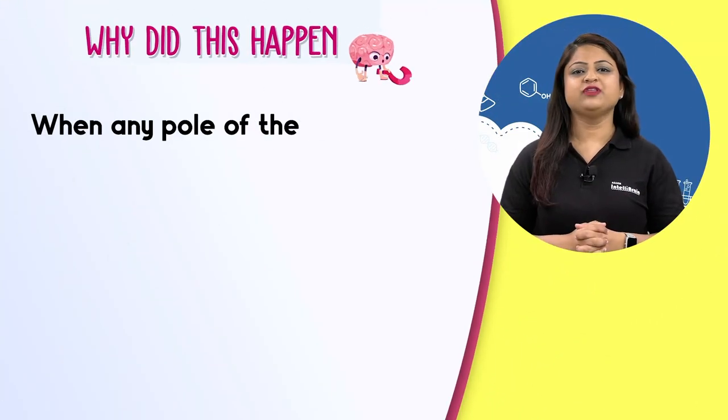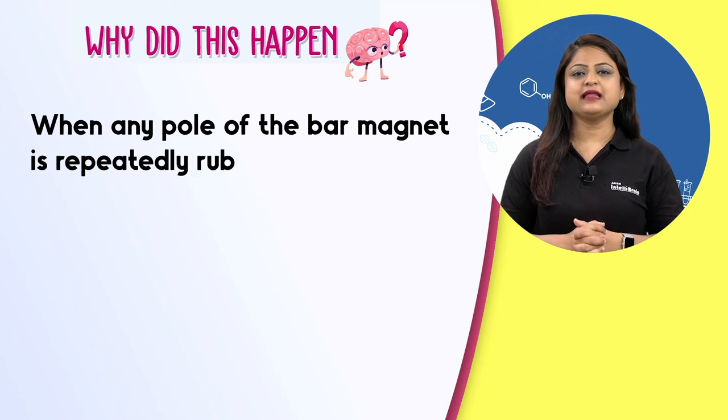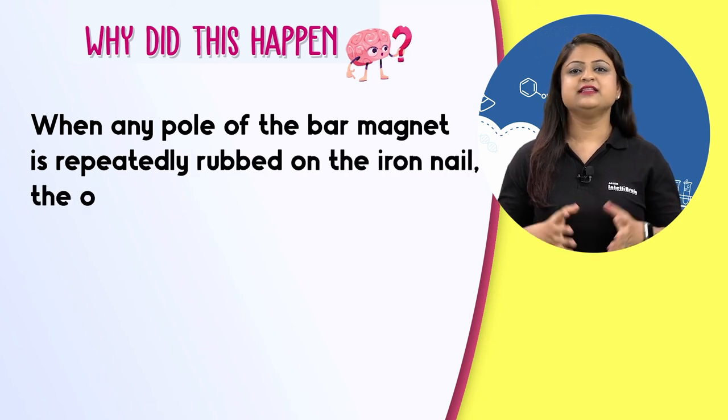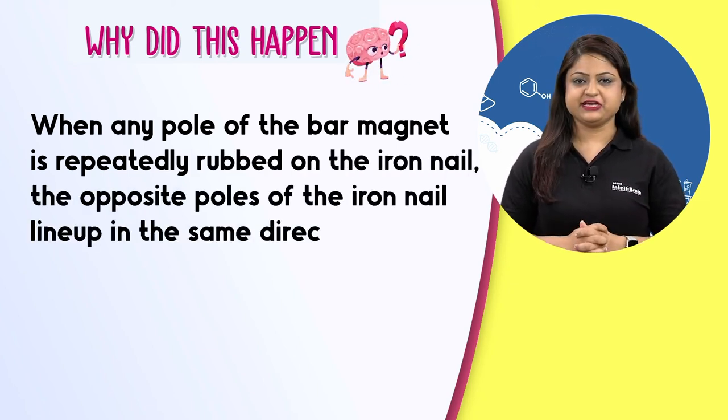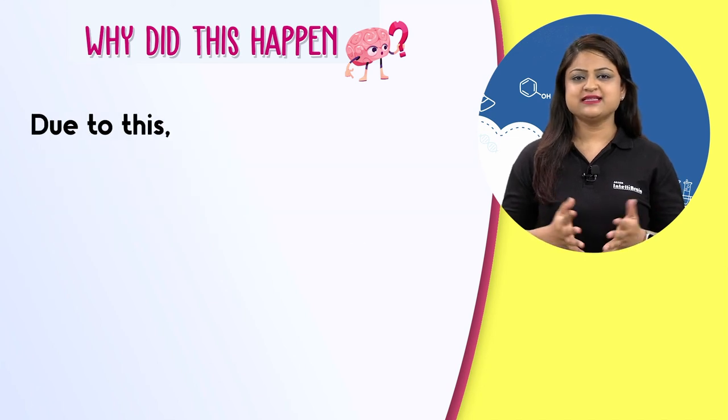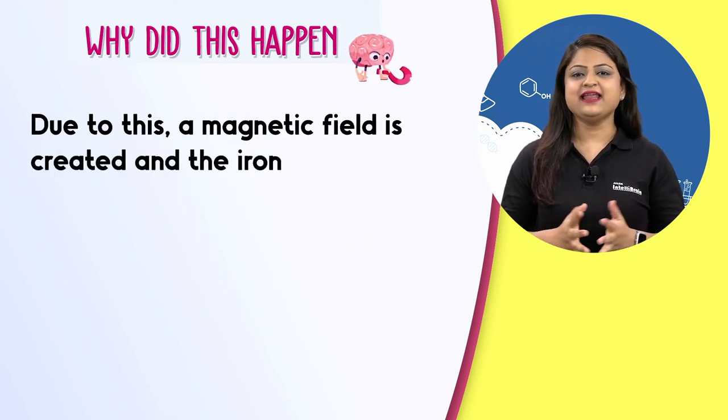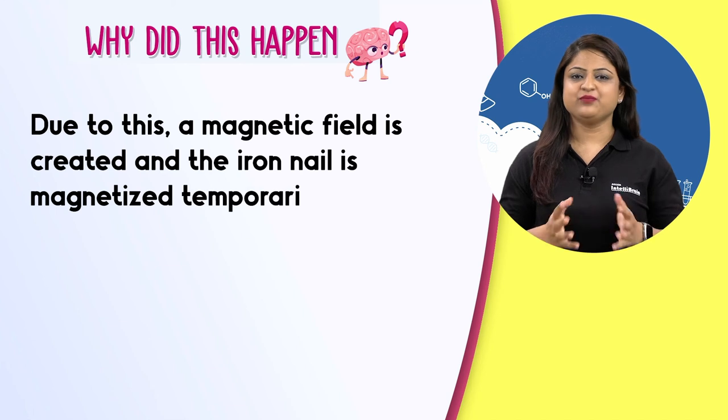When any pole of the bar magnet is repeatedly rubbed on the iron nail, the opposite poles of the iron nail line up in the same direction. Due to this, a magnetic field is created and the iron nail is magnetized temporarily.